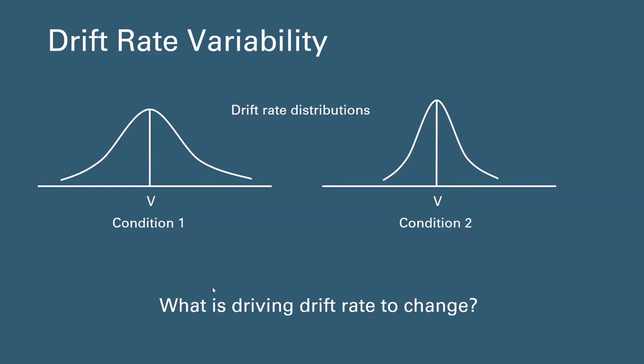But the question still remains: can we find factors that can explain the drift rate variability across trials? Or what is driving drift rate to change, specifically in recognition memory paradigm? Therefore, the aim of the current study is to include systematic sources of evidence in trial by trial changes in drift rate.